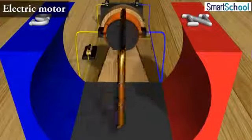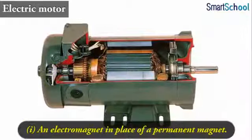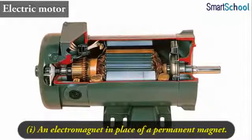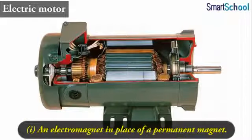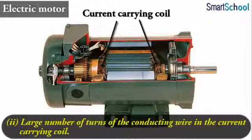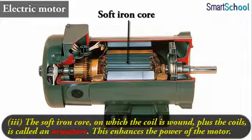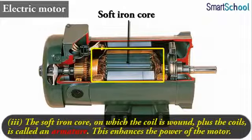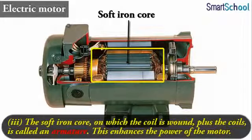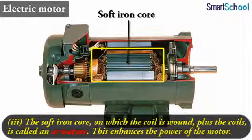The commercial motors use one, an electromagnet in place of permanent magnet. Two, large number of turns of the conducting wire in the current carrying coil. And three, the soft iron core on which the coil is wound plus the coils is called an armature. This enhances the power of the motor.